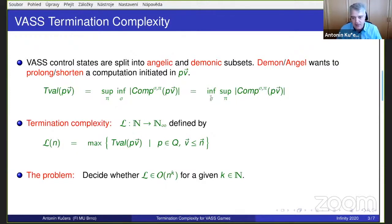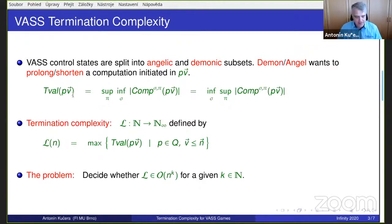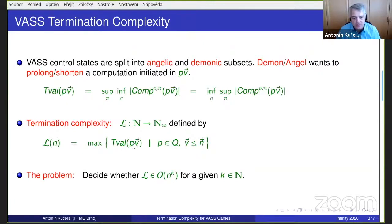These are VAS games where the two players have opposite objectives, and these games are determined, meaning the usual sup-inf equality holds. This equality also defines, for every initial configuration, the termination value — intuitively, the length of the computation obtained when initiated in configuration pv and both players play optimally. The termination complexity is a function assigning to every integer m the maximum termination value over all configurations with counter values bounded by m. The problem is: for a given VAS game, is the termination complexity asymptotically bounded by a polynomial of degree k?